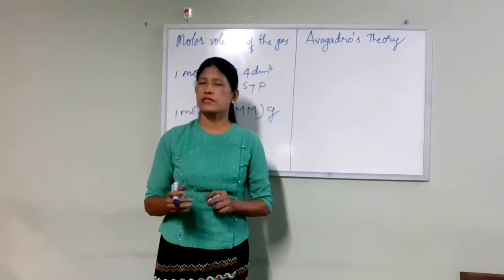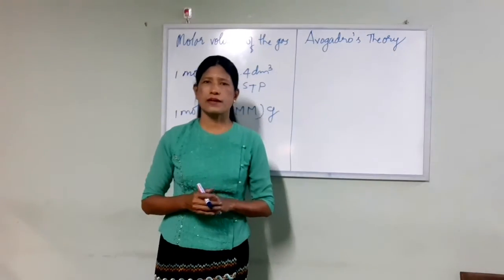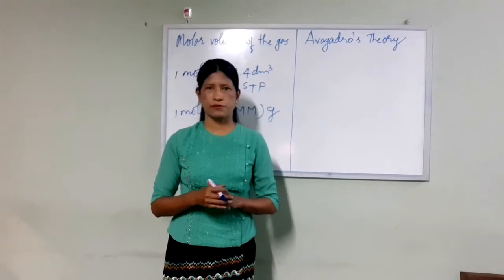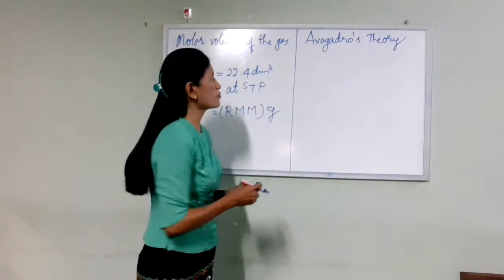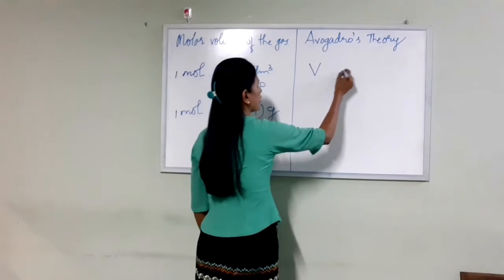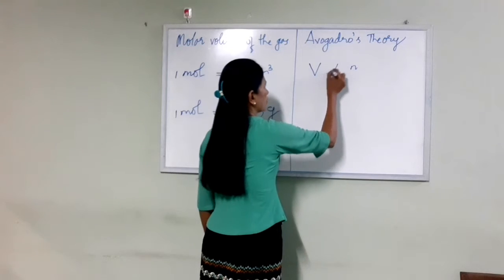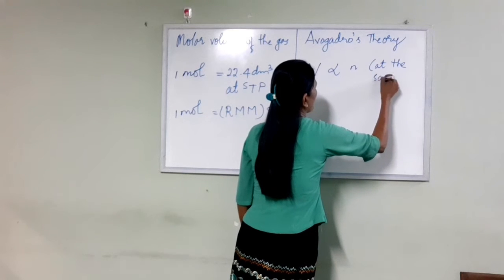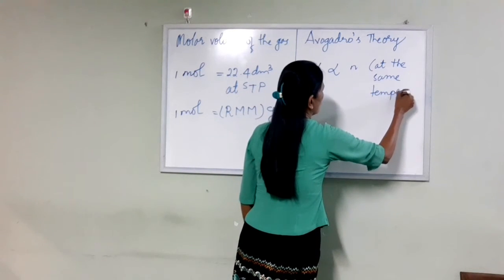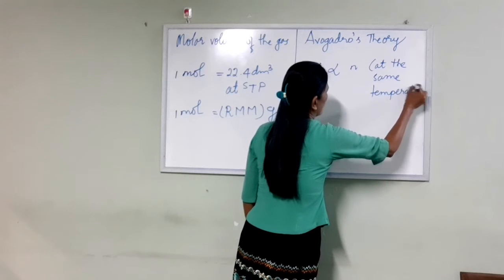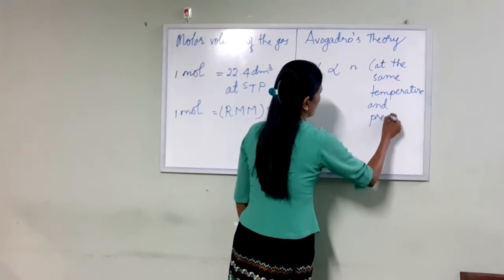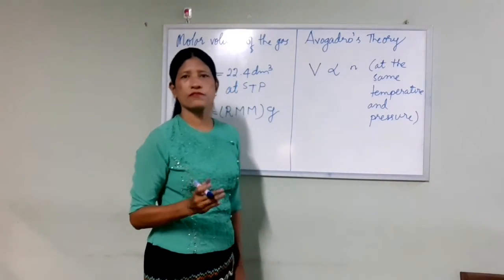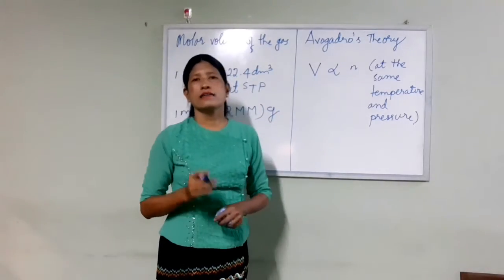At the same temperature and pressure, equal volumes of all gases contain the same number of molecules. To apply the mathematical expression using volume V and the number of molecules N at the same temperature and pressure: V is volume of the gas, N is number of molecules.